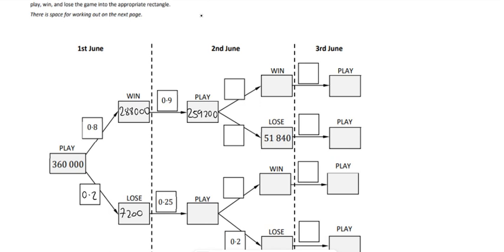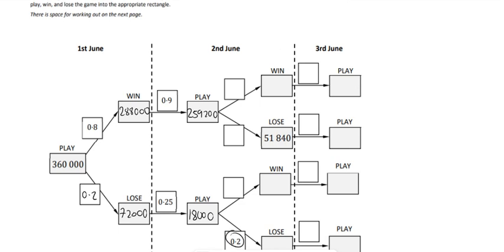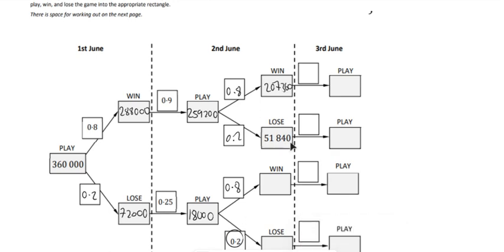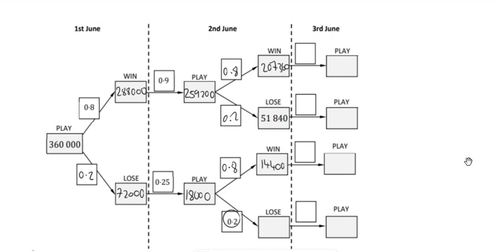72,000 × 0.25 = 18,000. The probability of 0.2 on one branch means 0.8 on the other, with 0.4 and 0.2 mirroring each other, since the chance of winning and losing remains the same. This gives 207,360 and 259,200 × 0.8 = 144,400, plus 18,000 × 0.8 = 14,400 and 18,000 × 0.2 = 3,600.